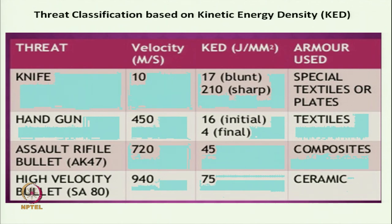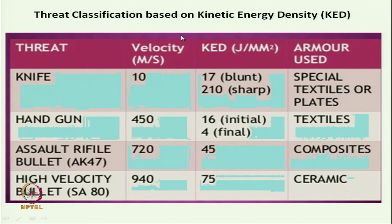In ballistic protective textiles, the threats are classified based on kinetic energy density (KED). At different levels of KED the threats are classified — threats due to a knife where velocity is typically 10 meters per second. There are two types: from a blunt knife the KED will be around 17 joules per square millimeter, and if it is sharp it can go up to 210.